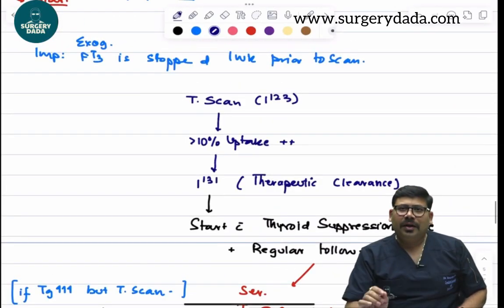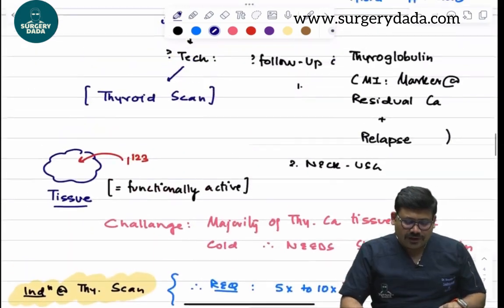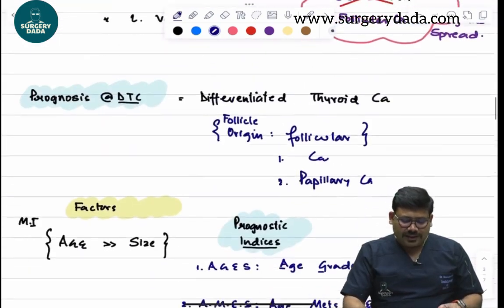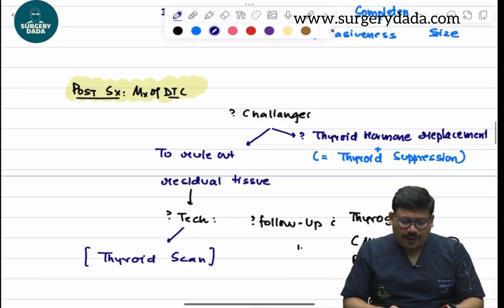Whenever we have a follow-up of a patient of DTC, we need to understand what is DTC. DTC means differentiated thyroid cancers, and it includes follicular and papillary types.